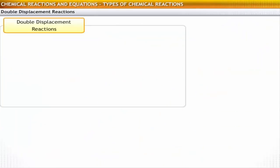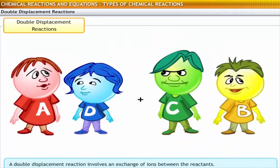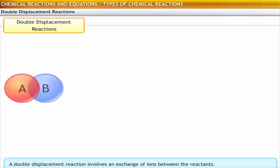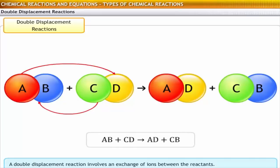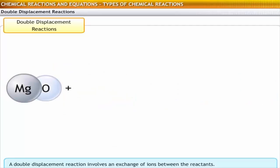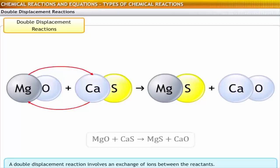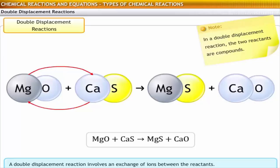A double-displacement reaction involves an exchange of ions between two compounds. The general form is: AB and CD undergo double-displacement to form AD and CB. A classic example is the reaction of magnesium oxide with calcium sulfide. In this reaction, magnesium and calcium ions interchange their places to form magnesium sulfide and calcium oxide. This reaction is known as a double-displacement reaction because two compounds are formed by the displacement of magnesium and calcium ions with each other. When both reactants in a reaction are compounds, it is a double-displacement reaction.